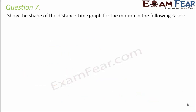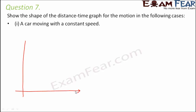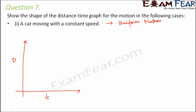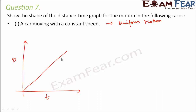Question number seven: show the shape of the distance-time graph for the following cases. A car moving with a constant speed: with distance on the y-axis and time on the x-axis, a car moving with constant speed is uniform motion. The graph would be a straight line, because the car covers equal distances in equal intervals of time.